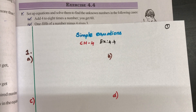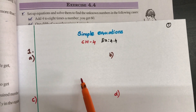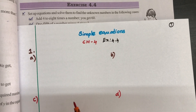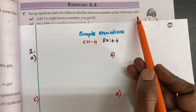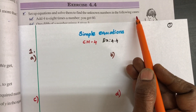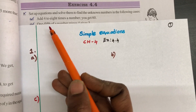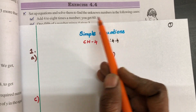Hi friends, welcome to Simplify Maths. Today we are going to learn exercise 4.4 of chapter 4, simple equations. We are going to write the equation first and then solve them to find the unknown numbers.